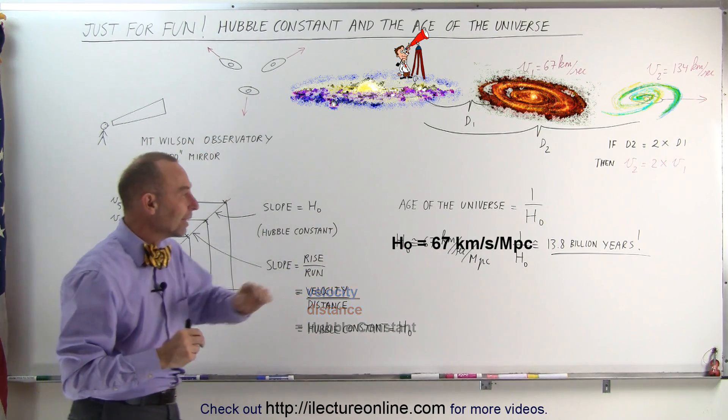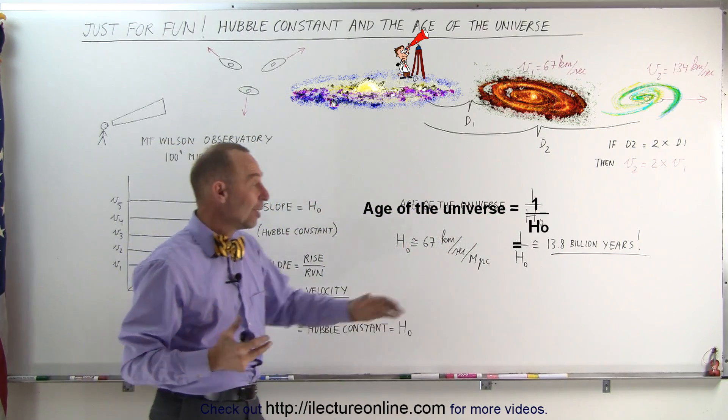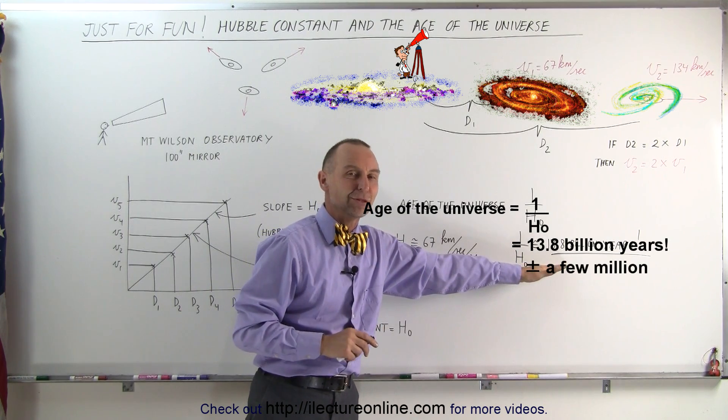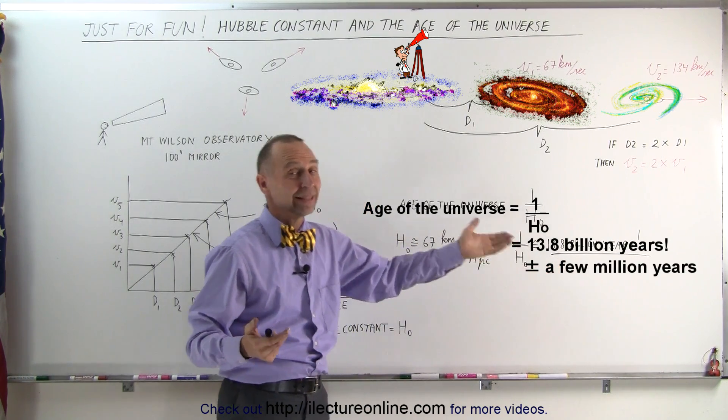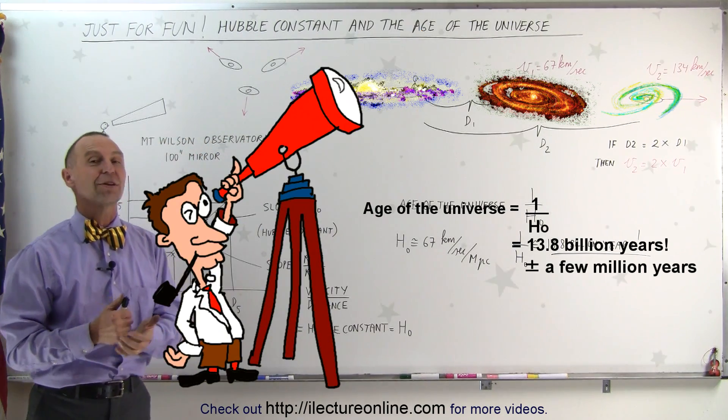And today we know that the age of the universe simply is the inverse of that constant, which happened to be 13.8 billion years, plus or take a few million years. Today we know that that's the age of the universe because of the work that Hubble did. Quite a discovery.